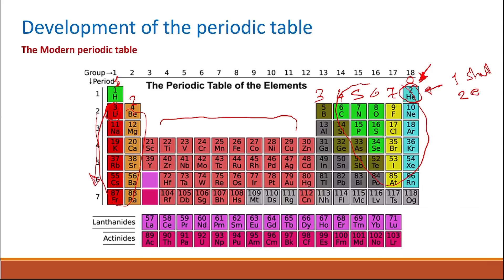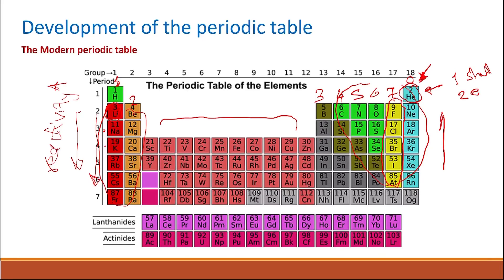The reactivity trend differs between groups. In Group 1, reactivity increases going down the group — so potassium is more reactive than sodium, and sodium is more reactive than lithium. In Group 7, the trend is reversed: reactivity decreases going down the group, or increases going up the group.